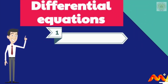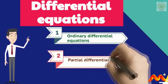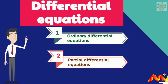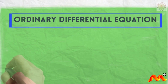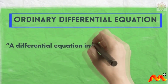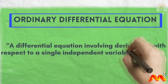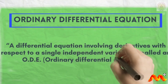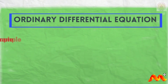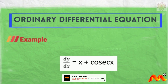The two main types are ordinary differential equations and partial differential equations. An ordinary differential equation (ODE) is a differential equation involving derivatives with respect to a single independent variable. For example: dy/dx = x + cos(x).